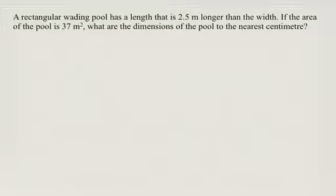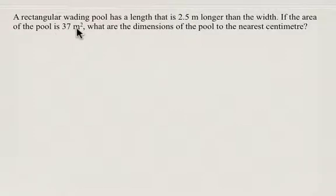In this problem, we're told that a rectangular wading pool has a length that is 2.5 meters longer than the width. We're also told that the area of the pool is 37 meters squared. In the question, we're asked to find the dimensions — the length and the width — to the nearest centimeter.